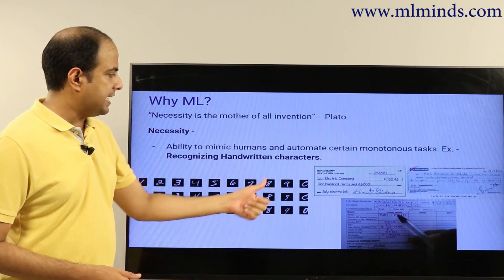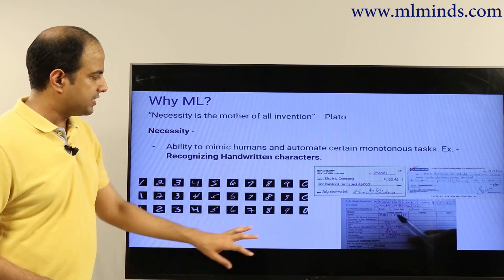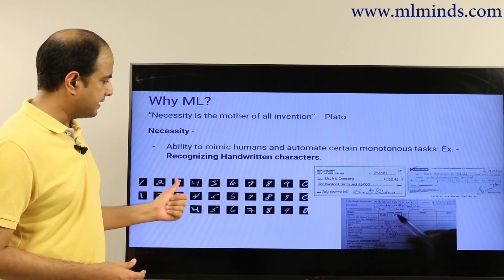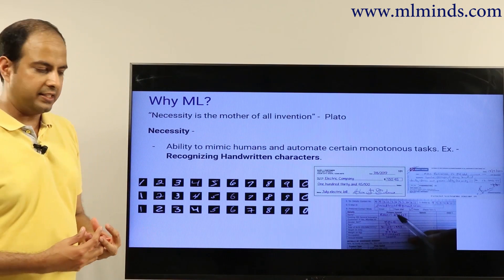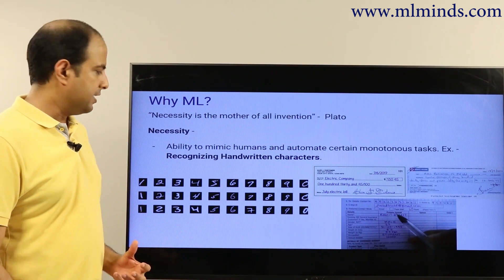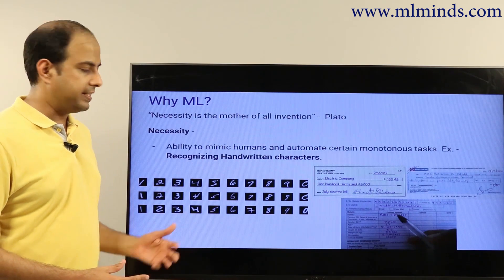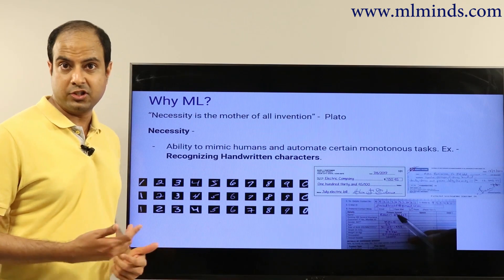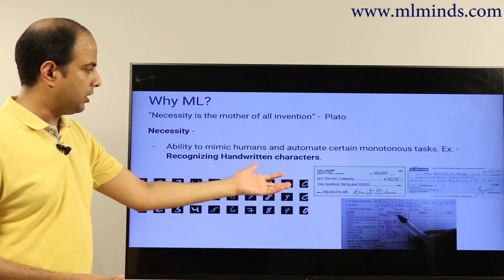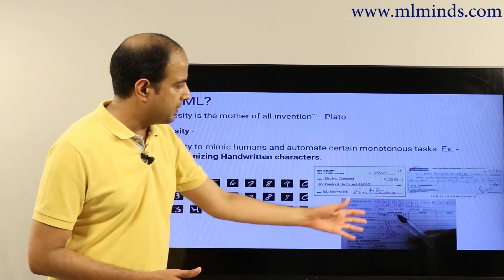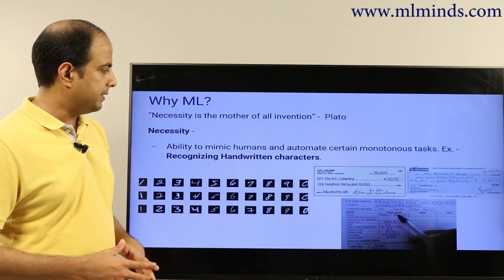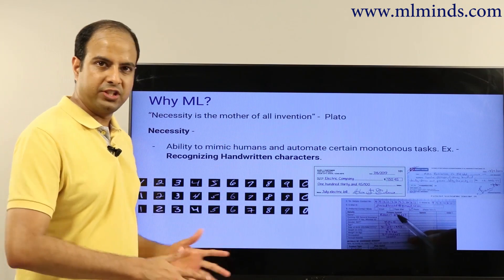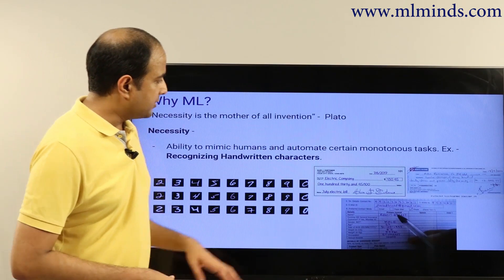One of those tasks is recognizing handwritten characters. This is a snapshot of a popular dataset called the MNIST numbers dataset — these are handwritten digits. The idea is to design a machine learning model that can automatically identify whether a number is five, six, seven, and so on. This has lots of applications across various sectors, for example when filling insurance forms where handwritten text needs to be read by automated mechanisms and processed by downstream systems.